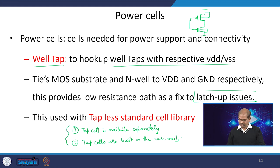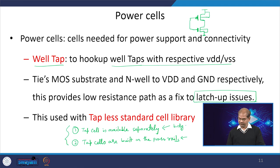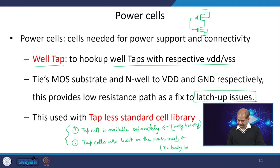If the tap cell is available separately, it is possible to create a different supply for body contact and perform body biasing. However, if the tap is built into the power rail, body biasing is not possible in that case.